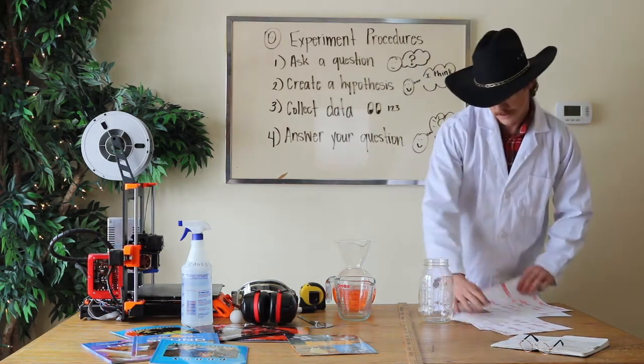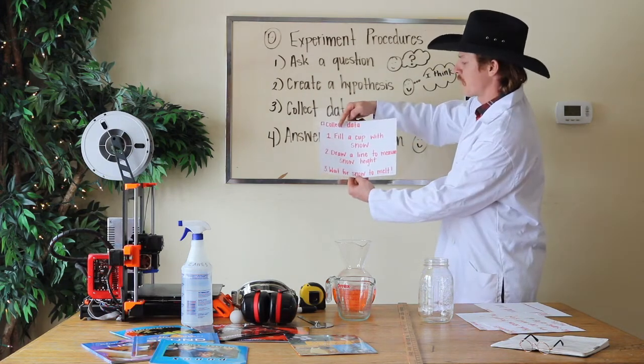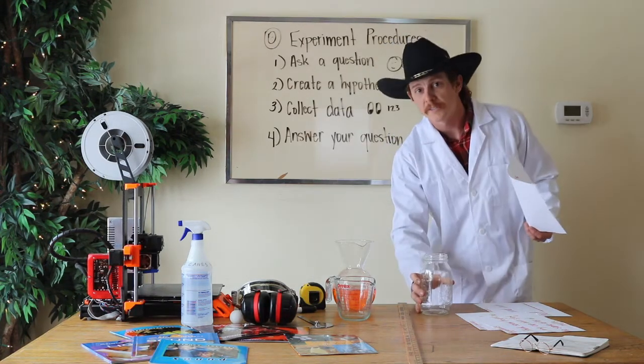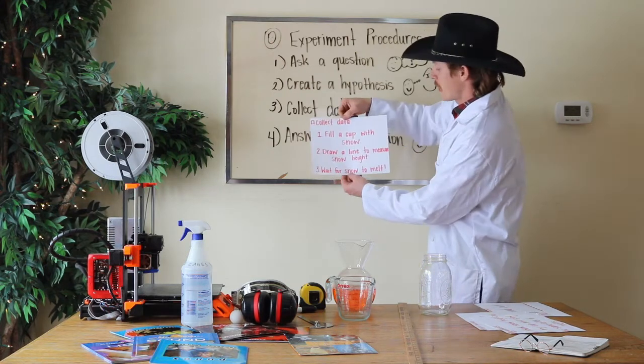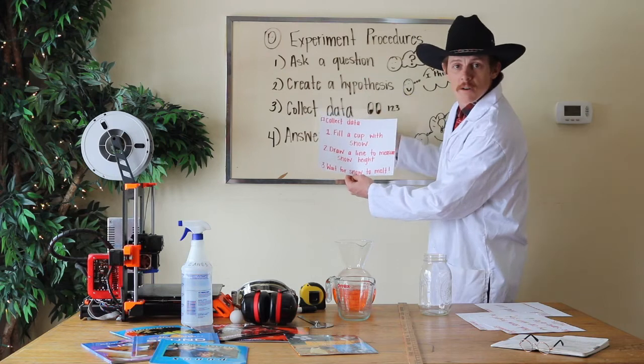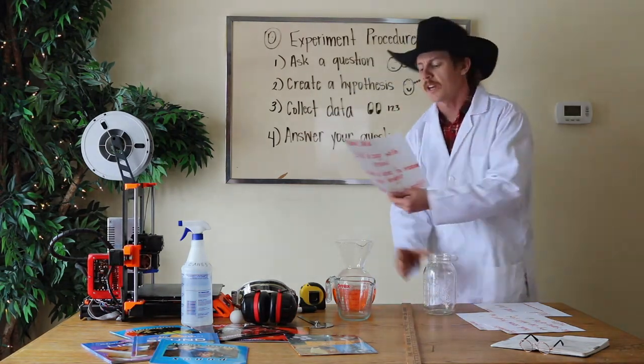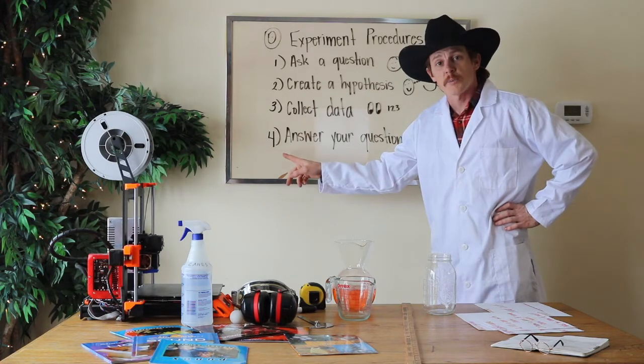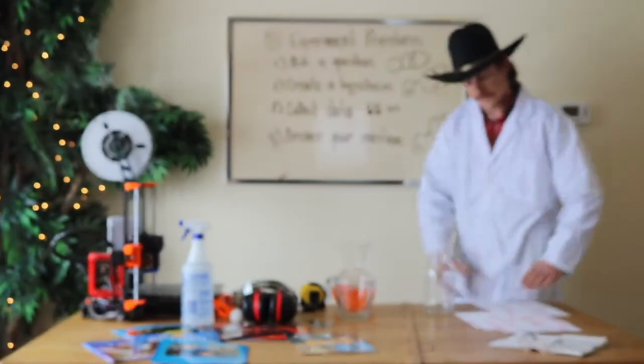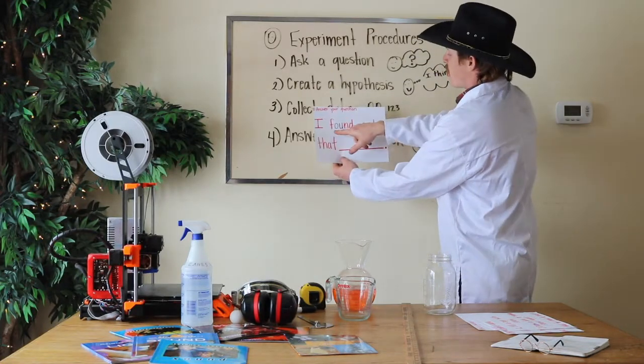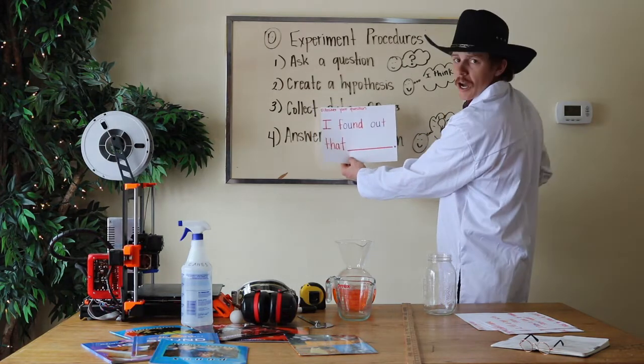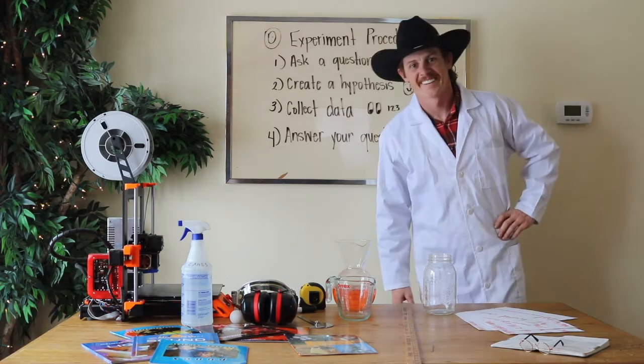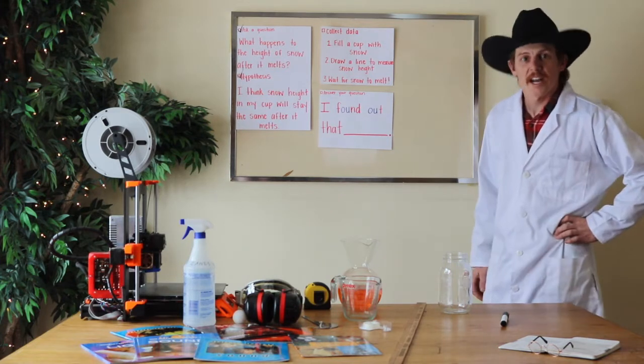Collect the data. So to collect our data we're going to fill a cup with snow. I got my cup right here, but we can use anything we find. It doesn't have to be clear, it could be a different shape, taller, smaller, it don't matter. Then I'm going to draw a height to measure the snow. And three, I wait for the snow to melt, so we let it sit overnight. Finally, we're going to end our experiment by answering our question. So we're going to find something out and then we're going to report it. That's the basics of our experiment.